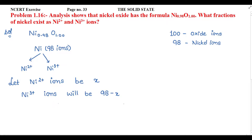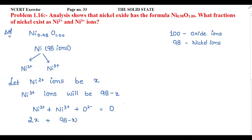To find the values, the total charge of the compound must be zero. The Ni²⁺ ions are combining with oxide ions, and Ni³⁺ positive ions combine with O²⁻ ions — the overall charge of the compound is zero. So x ions having charge 2⁺, plus (98 minus x) ions with charge 3⁺, plus 100 oxide ions with charge minus 2, all equal to zero.